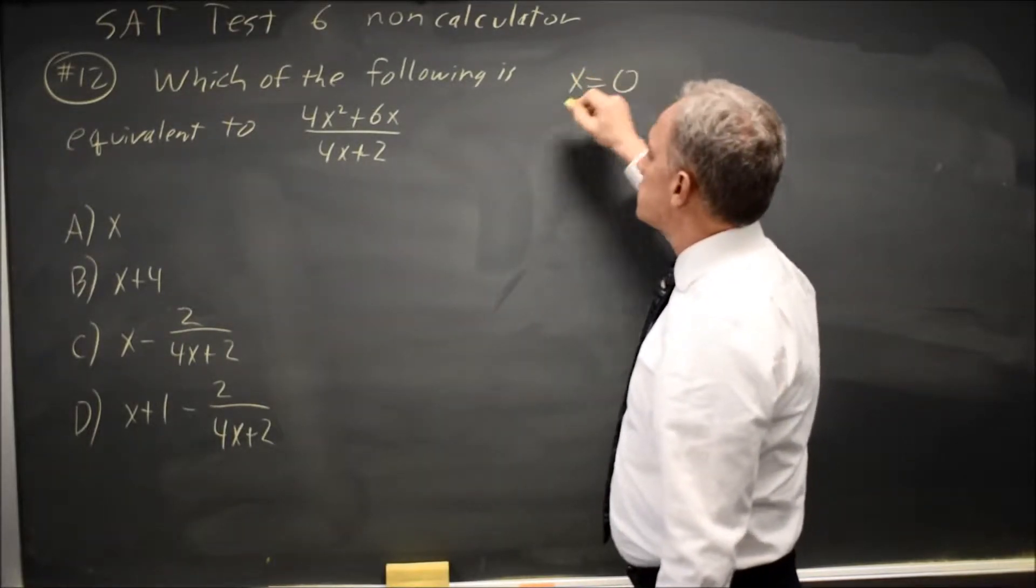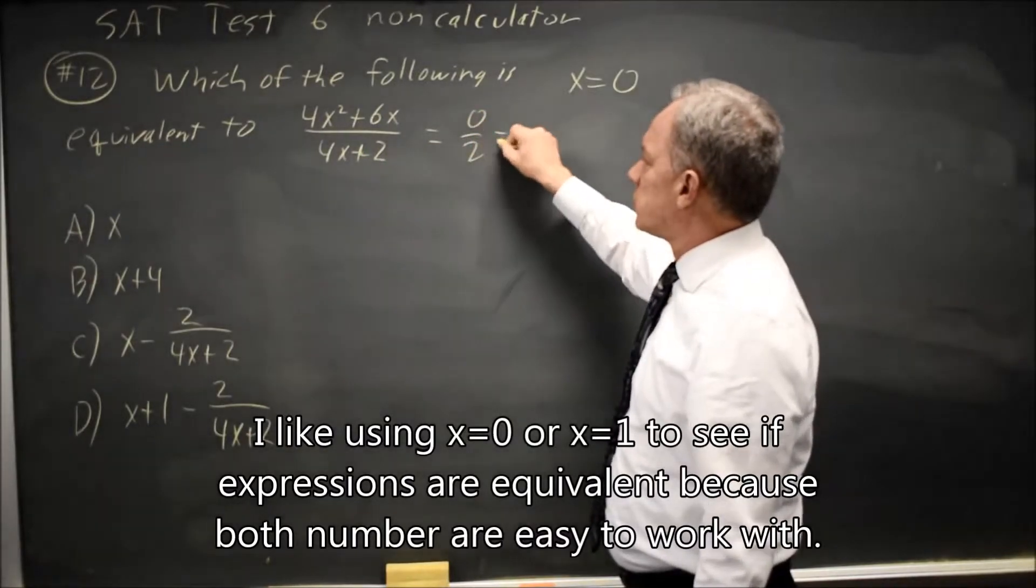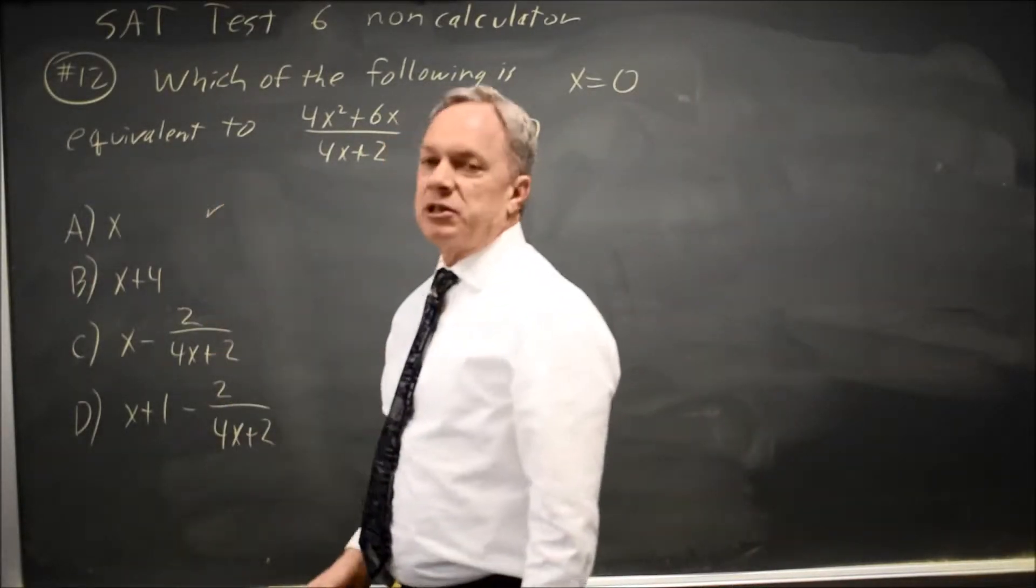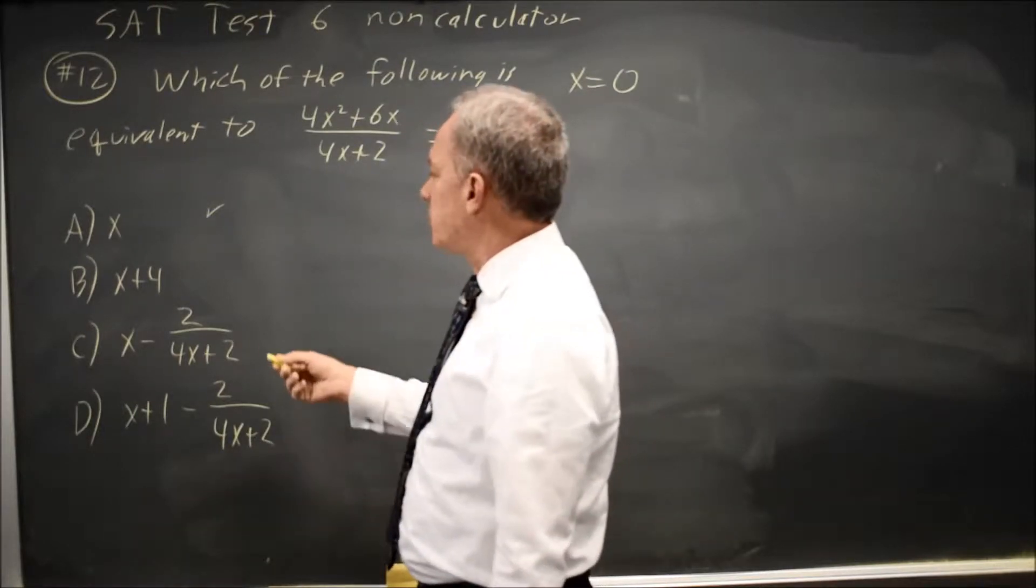At 0, this is 0 over 2, which is 0. That matches choice A, but that doesn't mean choice A is correct, because other choices may match when you're making up numbers.